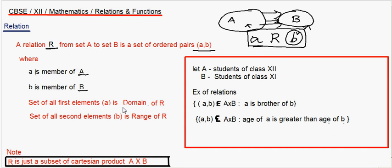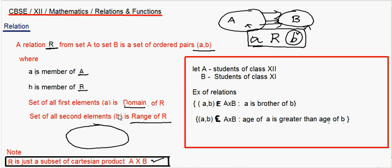One more important thing: the set of all first elements — if you have a set of ordered pairs and you pick up only the first elements — that is called the domain of that relation. And similarly, the set of all second elements is called the range of the relation R. An important note is that R is just a subset of the Cartesian product A×B. I hope all know what is Cartesian product. Suppose you take set A and B — the Cartesian product is the set of all ordered pairs, and obviously a relation will be a subset of that Cartesian product.